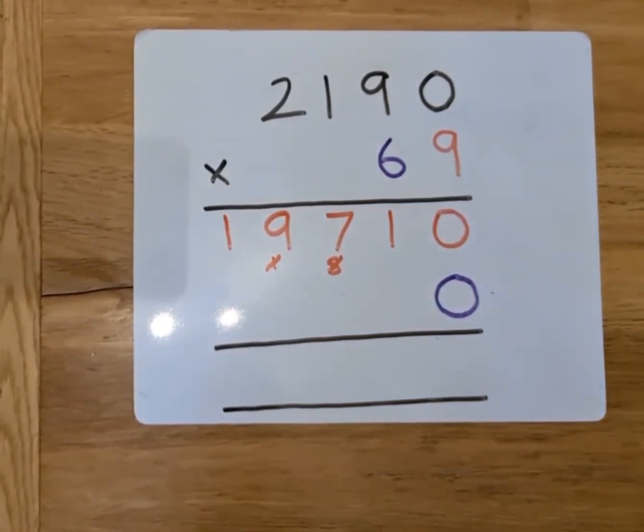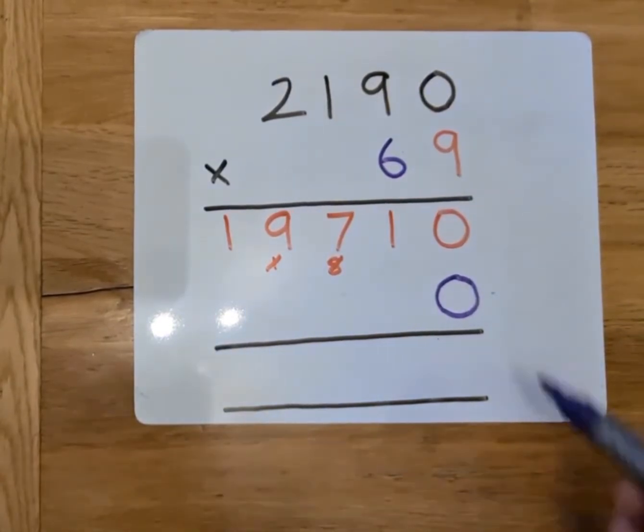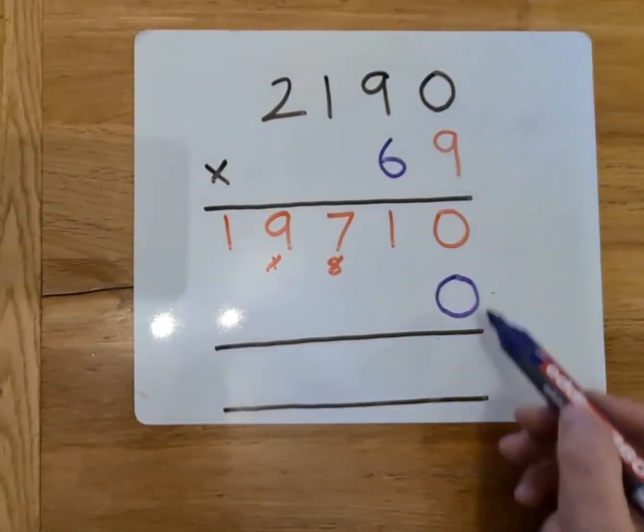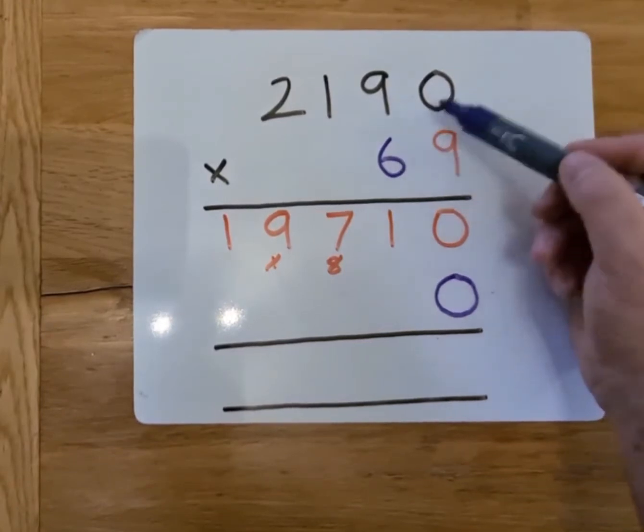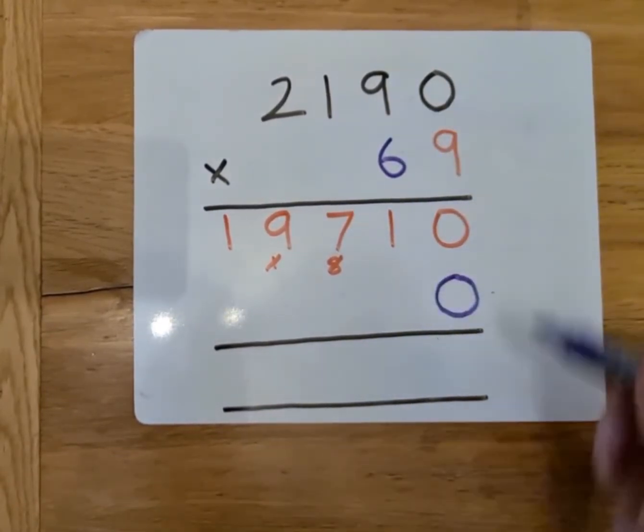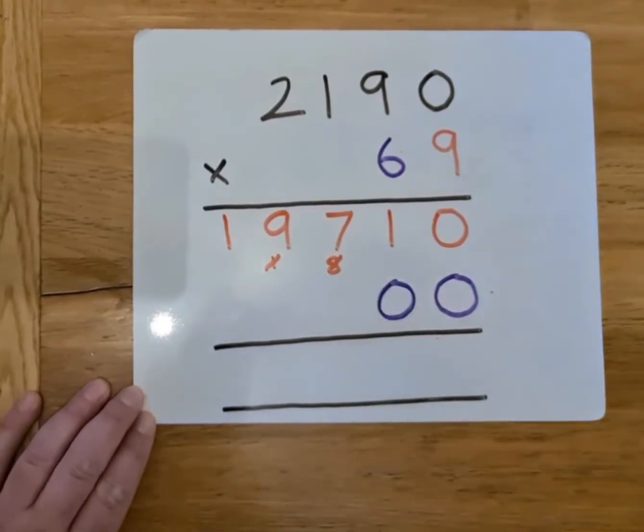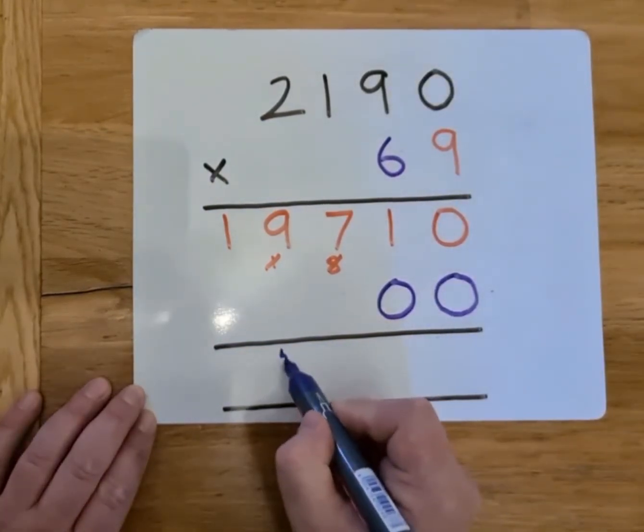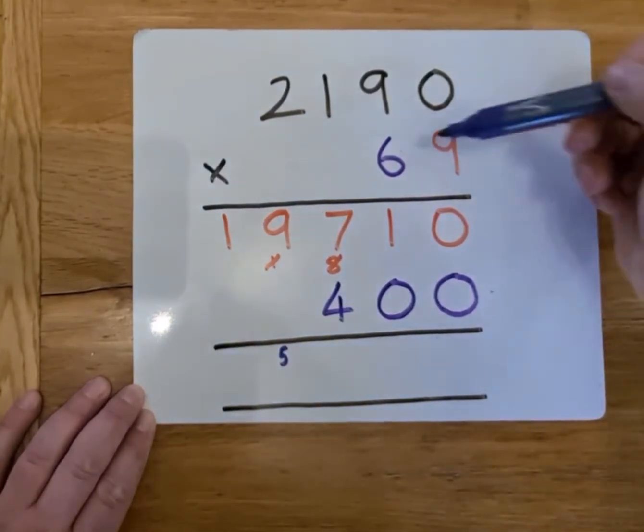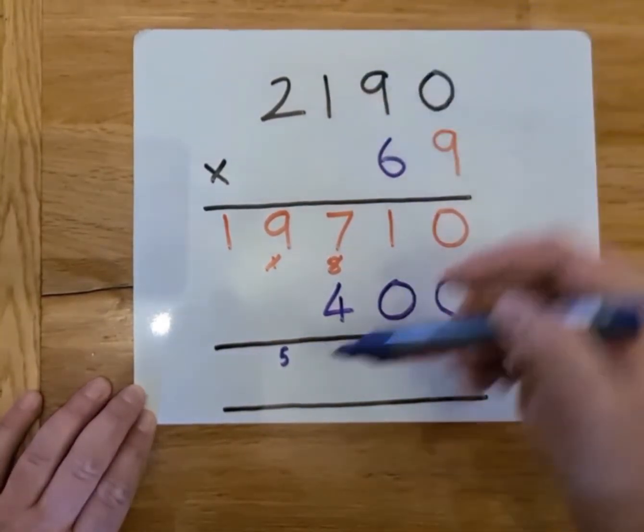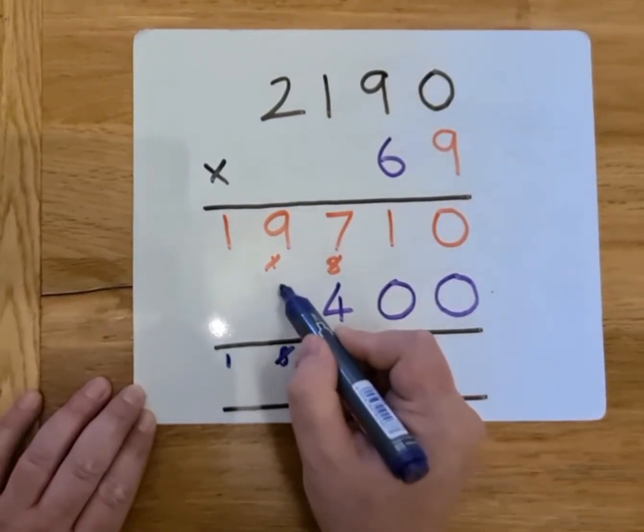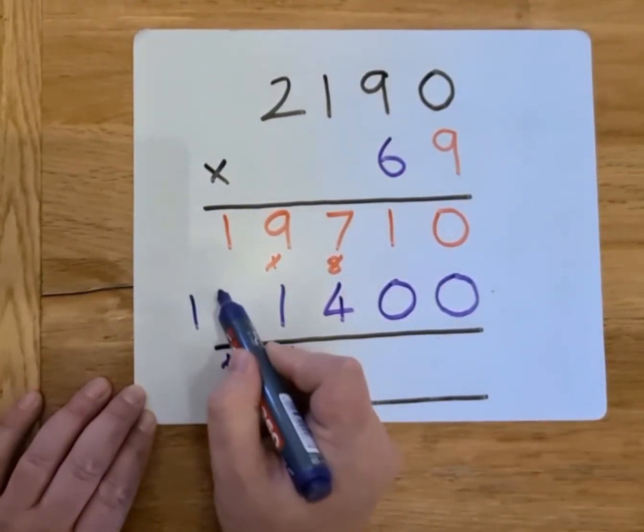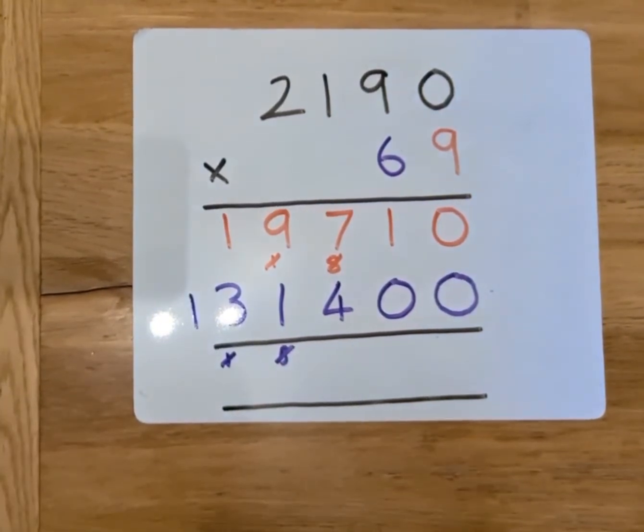We'll now move on to the tens. Remember, it's not 6, it's 60, which is why we've put our 0 here. So, starting off, 6 times 0 is 0. Don't make the mistake of thinking, oh, there's the 0. It's 60 times 0, but we still need to put our 0 in here. So, 6 times 0 is 0. 6 times 9 is 54. So, I'll put my 5 here and my 4 there. Moving on to 6 times 1. 6 ones are 6. Add 5 is 11. Carrying over the tens. And finally, 6 times 2 is 12. Add the extra 1 is 13. I've got 131,400.